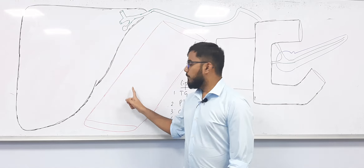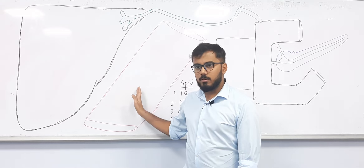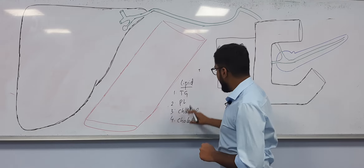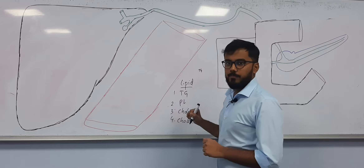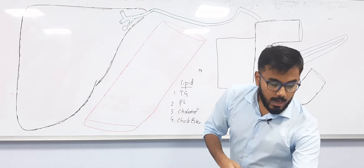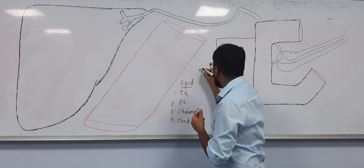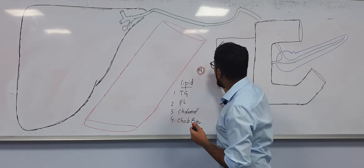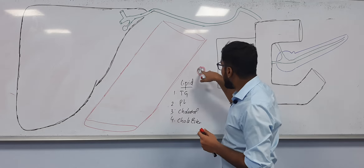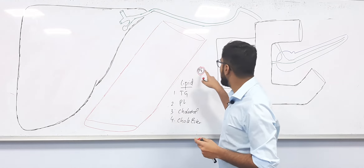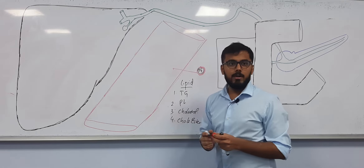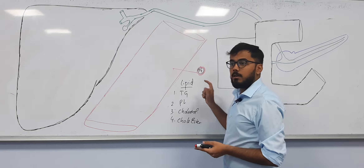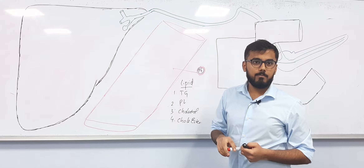In the blood vascular system there are proteins, which are soluble in water. What we do is take triglyceride, put it in the center, and coat it completely with a protein layer. Blood then only sees the protein coat — not the inner lipid core.